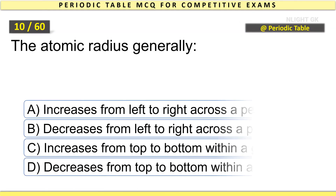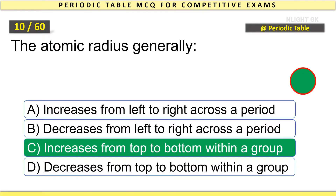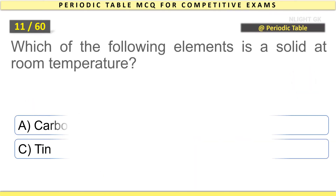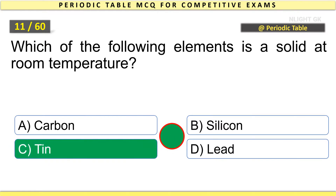The atomic radius generally increases from top to bottom within a group. Which of the following elements is a solid at room temperature? Tin.